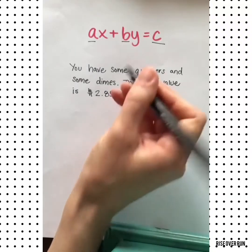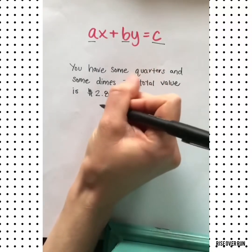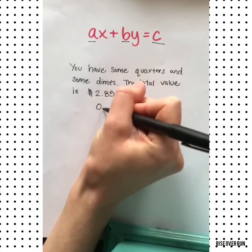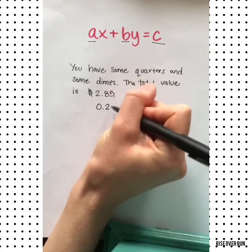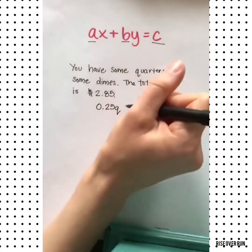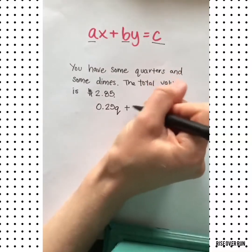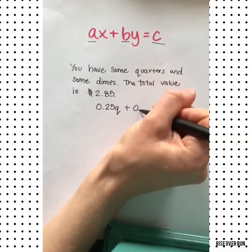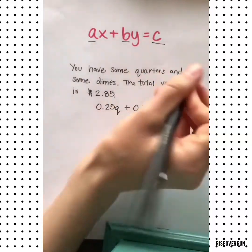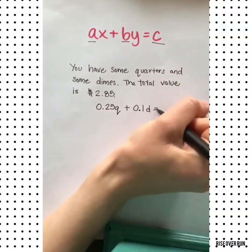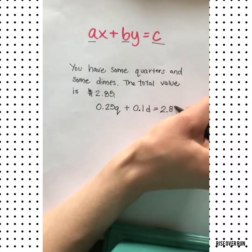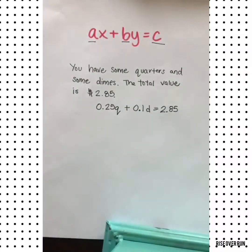First we think about the quarters — quarters are worth $0.25. Then we have the dimes — dimes are worth $0.10. And all together, we have a value of $2.85.